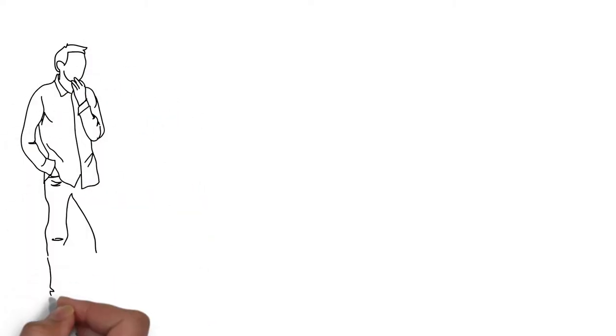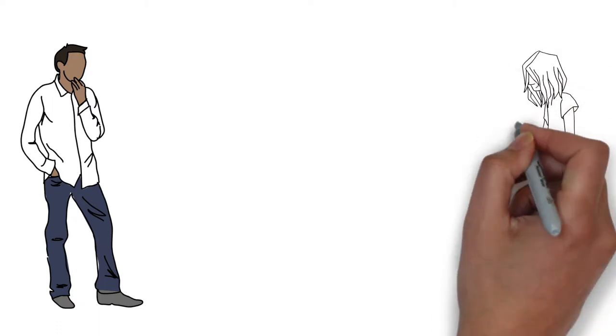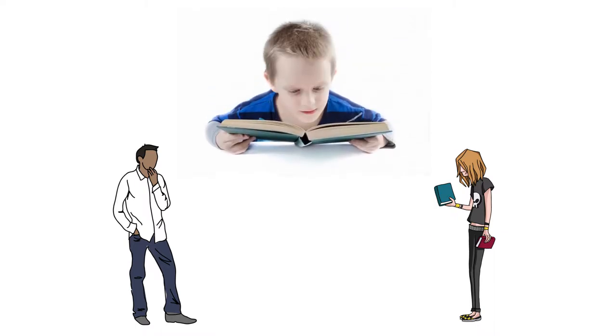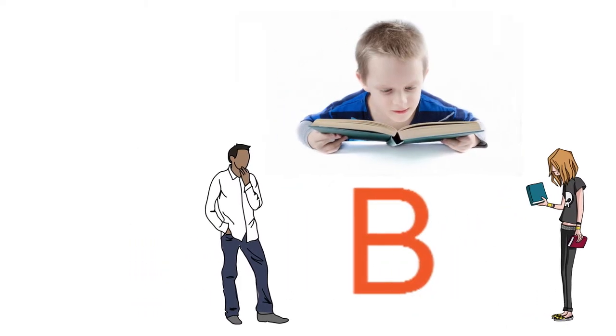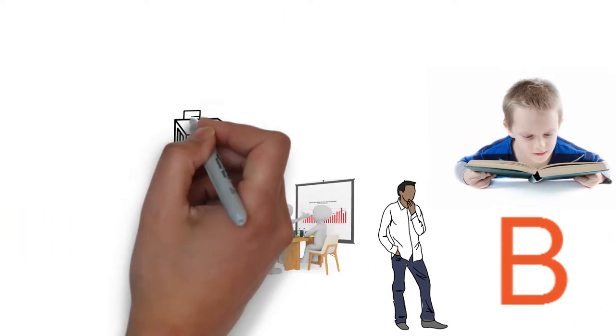However when the second test rolled around the students got to thinking. The flunkers thought I'll be getting a B anyway so I don't need to study anymore. While the toppers thought it doesn't matter how much I study because I will also be getting a B. When the results came out the class average had dropped to a D.